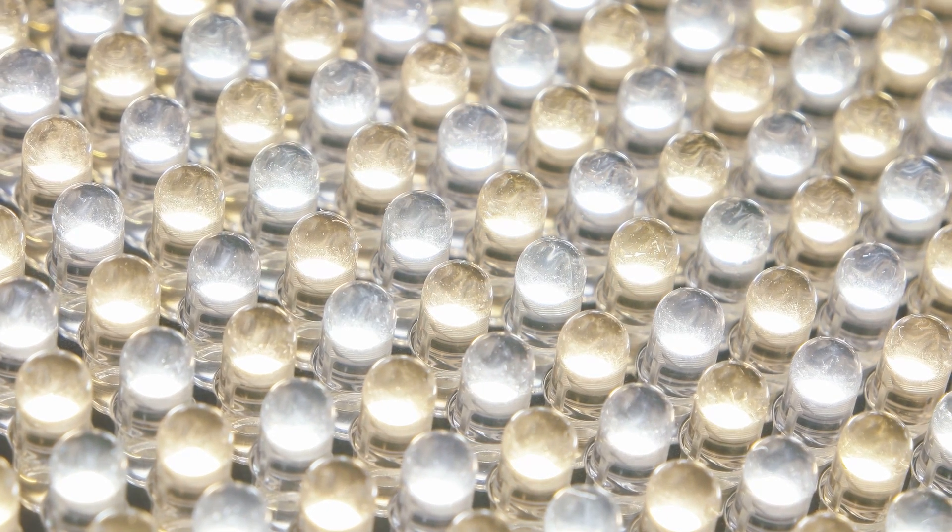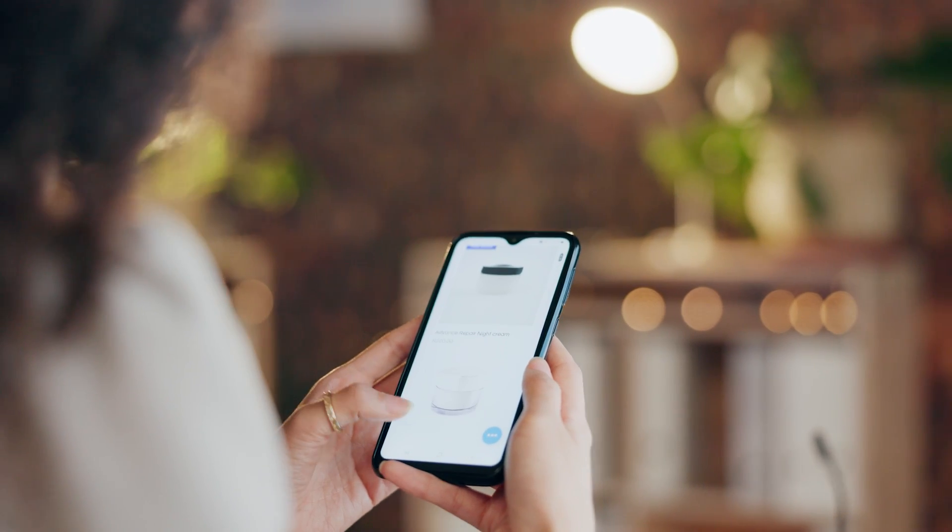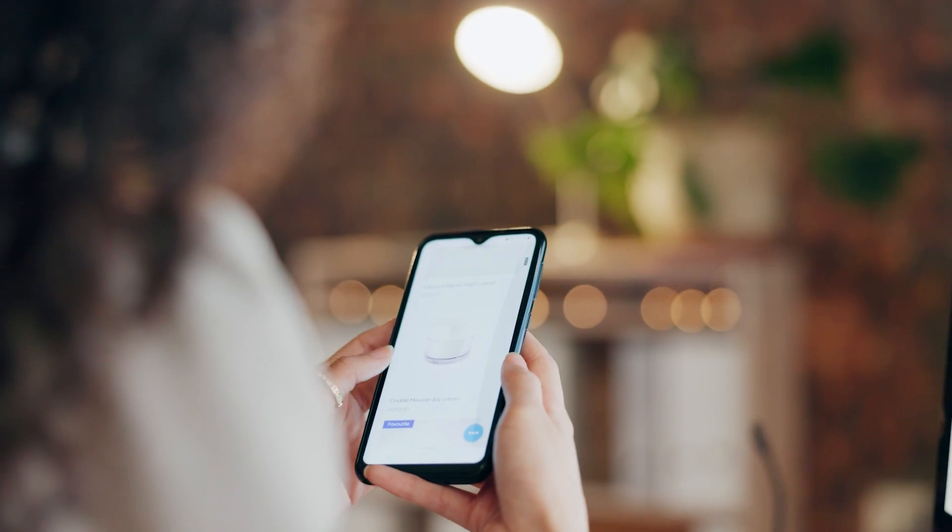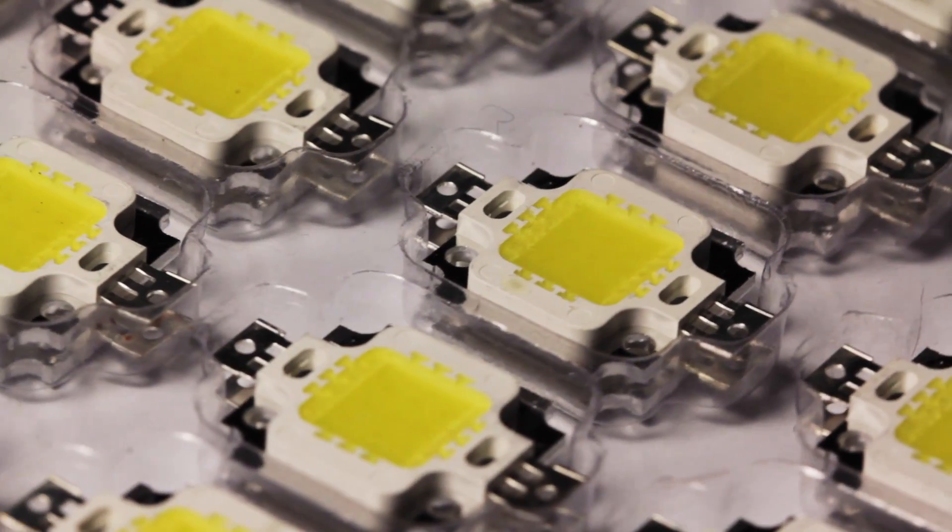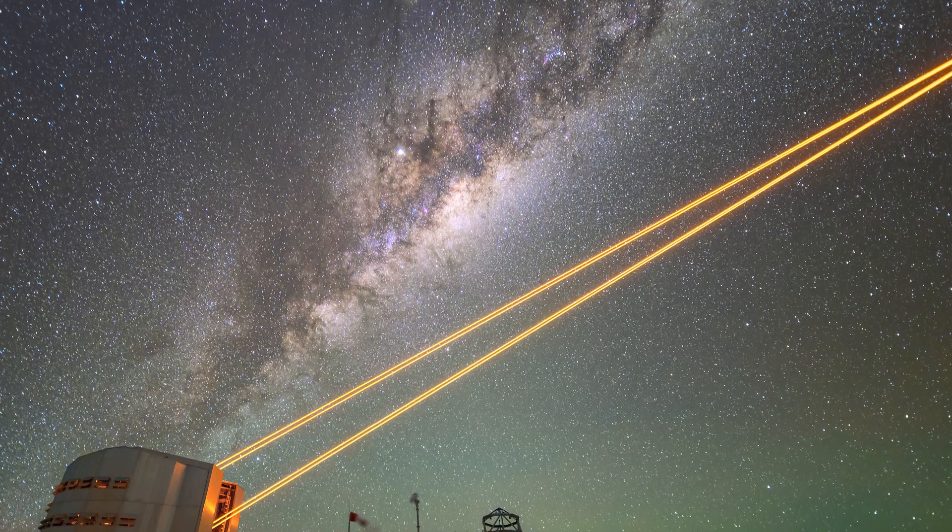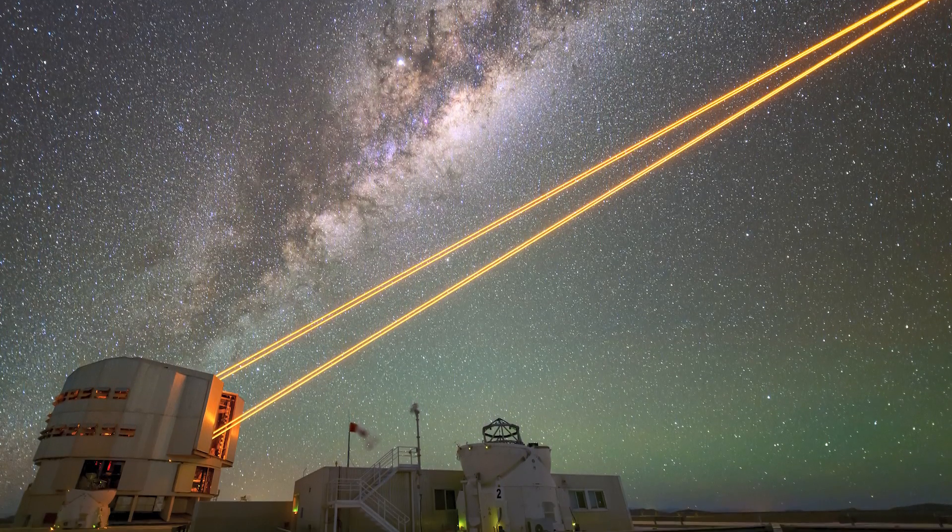LEDs are so efficient. There is a reason that screens are made from them. But what if LEDs could also be lasers? Could we take one of the cheapest and most efficient ways of making light and use it to produce something as sophisticated as a laser?